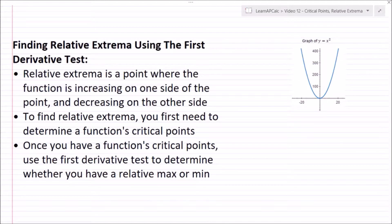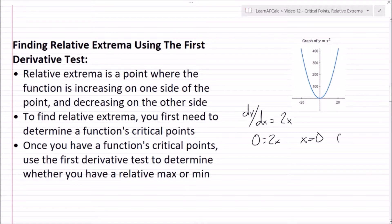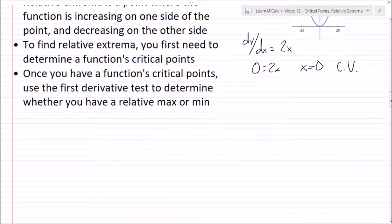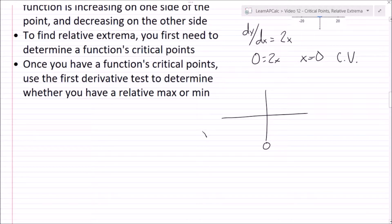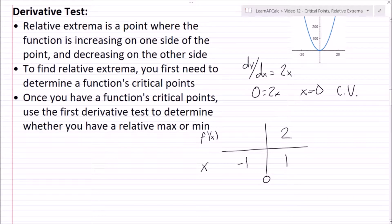To find relative extrema, first determine the function's critical points, then use the first derivative test to determine whether you have a relative min or max. For y equals x squared: dy/dx equals 2x, set equal to zero gives x equals zero as the critical value. Set up a table with the critical value, x, and f prime of x. Pick a value to the left, negative one, and to the right, one. f prime of one equals two and f prime of negative one equals negative two.